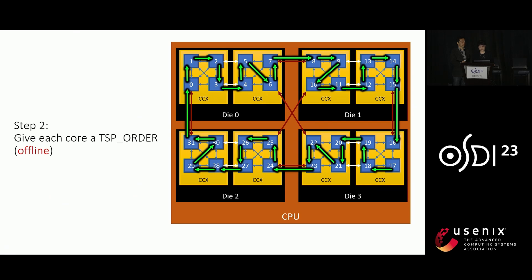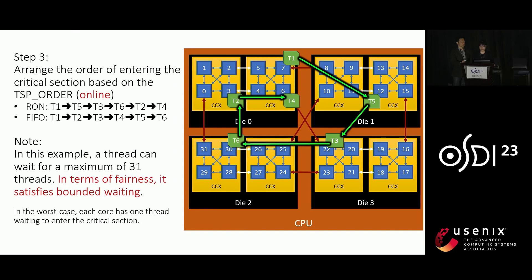The second step is assigning a TSP order to each core, also performed offline. By assigning the TSP order, we determine the order in which cores will participate in accessing the critical section. In step three, we arrange the order of entering the critical section based on the TSP order. For example, using RUN, the order of entering the critical section could be T1, T5, T3, T6, T2, and T4. In comparison, a first-in first-out approach would have a different order: T1, T2, T3, T4, T5, and T6.